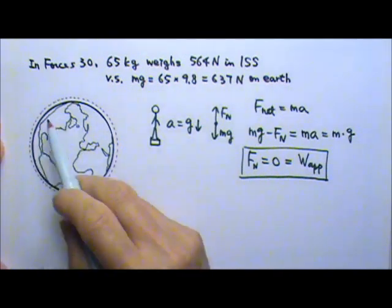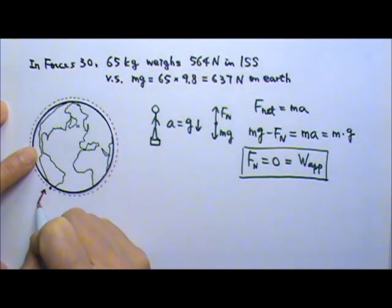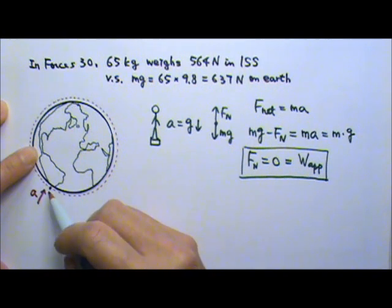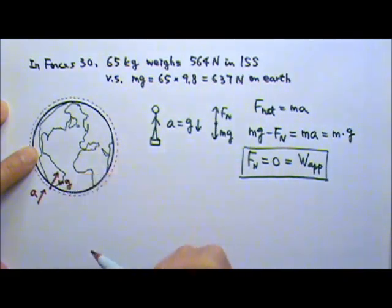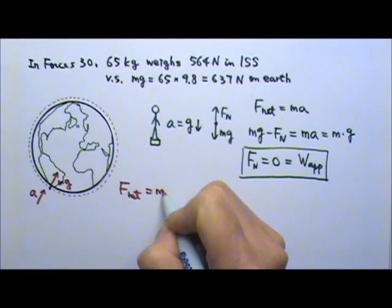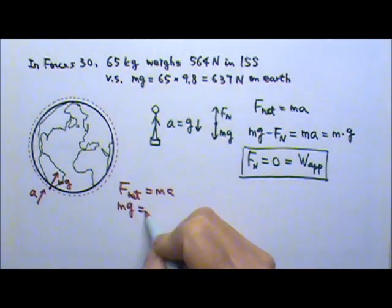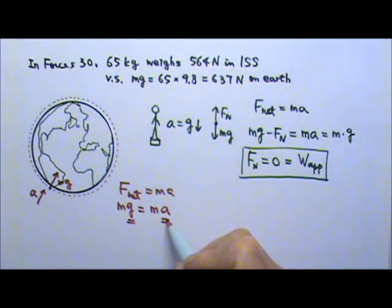When the space station or space shuttle orbits around the Earth, it has a centripetal acceleration towards the center. If you draw the force diagram of an astronaut inside, you would have mg towards the center of the Earth. If I write the force equation, net force equals ma, that means mg equals ma. That means g must equal the acceleration. The acceleration is the same as the gravitational acceleration. That's why the astronauts appear to be weightless.